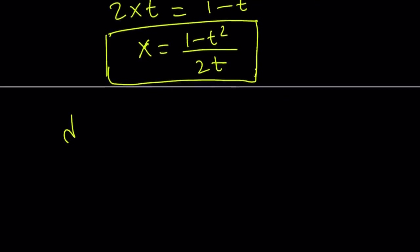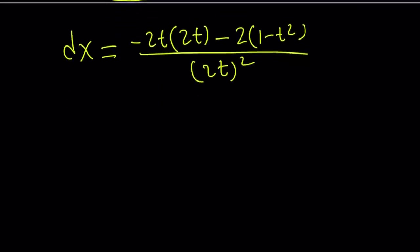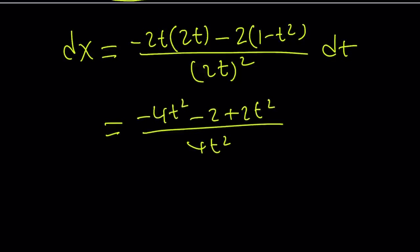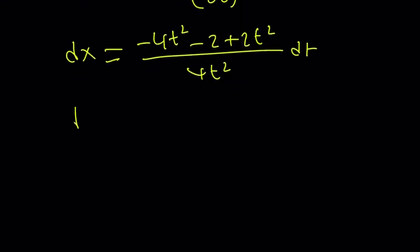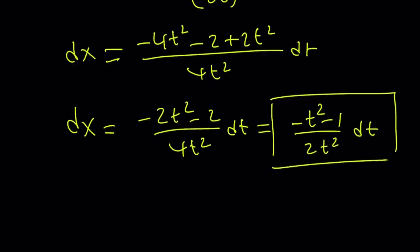That's cool because we're going to use substitution. And we do need dx. Let's go ahead and find out what dx is. dx is the derivative of x times dt. It's the quotient rule: the derivative of the numerator, negative 2t, multiplied by the denominator, minus the derivative of the denominator, which is 2, multiplied by the numerator — all divided by denominator squared. Don't forget to multiply by dt. Simplifying: negative 4t squared minus 2 plus 2t squared over 4t squared dt — that's dx — which simplifies to negative t squared minus 1 over 2t squared dt.